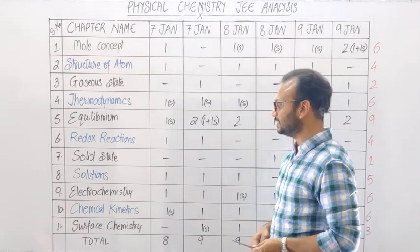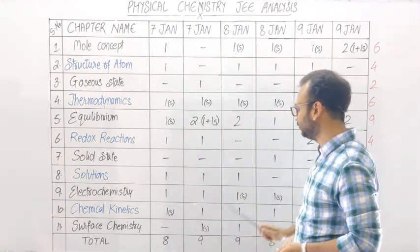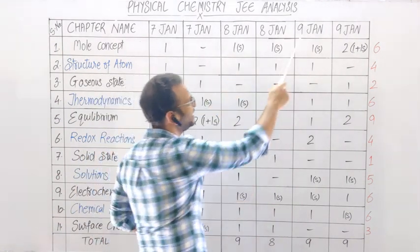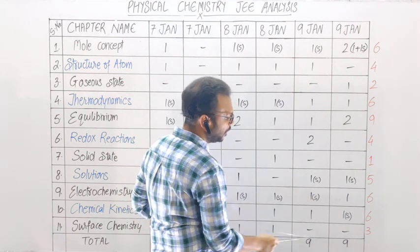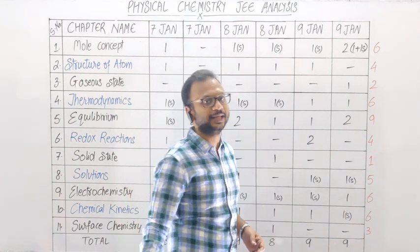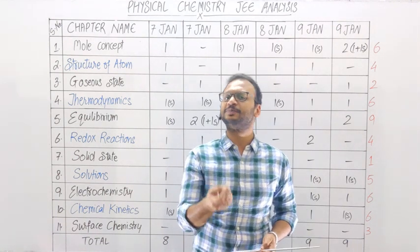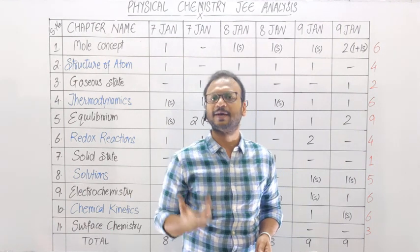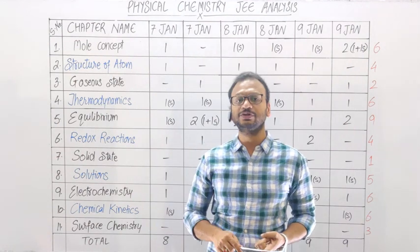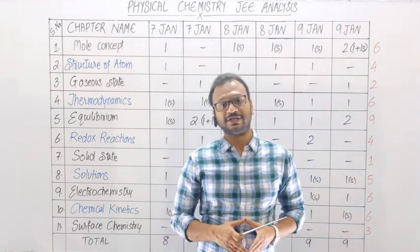Surface Chemistry mein: 7th January morning shift mein koi question nahin tha; evening shift mein ek subjective question tha; 8th January morning shift mein ek normal question tha; 8th January evening shift mein bhi ek question tha; 9th January morning aur evening dono shifts mein koi ek bhi question nahin aaya. Total: 3 questions — kisi-kisi paper mein question hoga, kisi mein nahin. Agar question aayega toh flocculation value aur Hardy-Schulze rule ko bahut achhe se cover karke jaana chahiye.